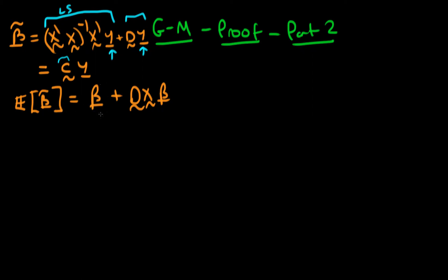The expectation of beta tilde was equal to the population parameter beta plus DX times beta, where in deriving this we've assumed zero conditional mean of errors. It's easy to see the conditions under which beta tilde will be unbiased: it will be unbiased if this second term is equal to zero. Because beta is a vector of coefficients, it won't in general be zero, so we need DX equal to zero in order for the expectation of our estimator to equal the population parameter.